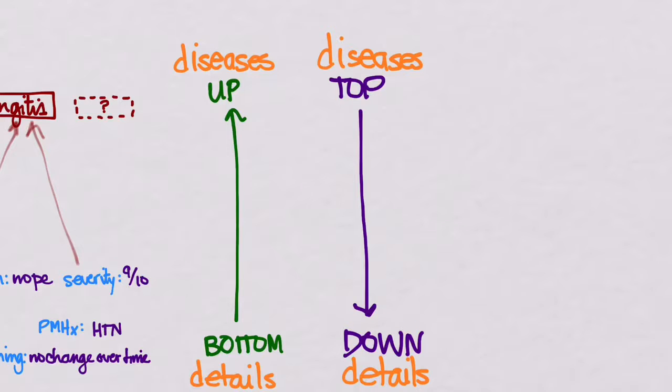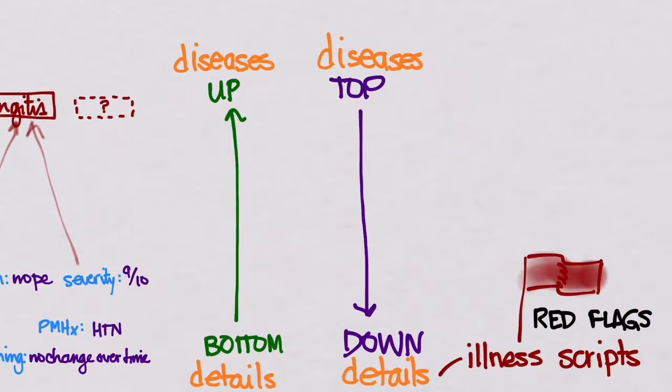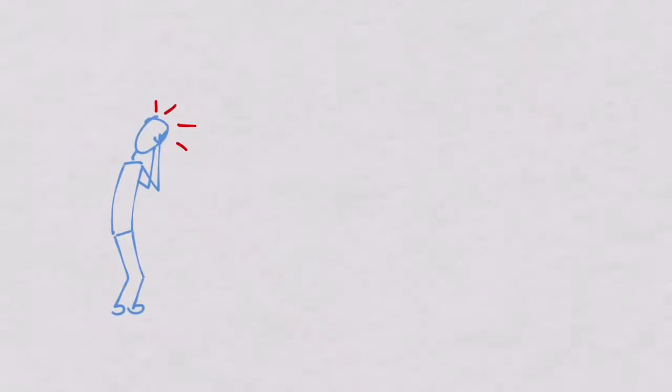And those details that we look for, those are called our illness scripts. These are the defining or distinguishing features of a disease, the signs and symptoms that you're going to look for that make a disease more or less likely. These are also the things that you want to put in your chart, the red flags that you're looking for to prove that you've thought of all of these things. So I think the best way to go through this is to use an example. Let's go back to our patient that's suffering from a headache.